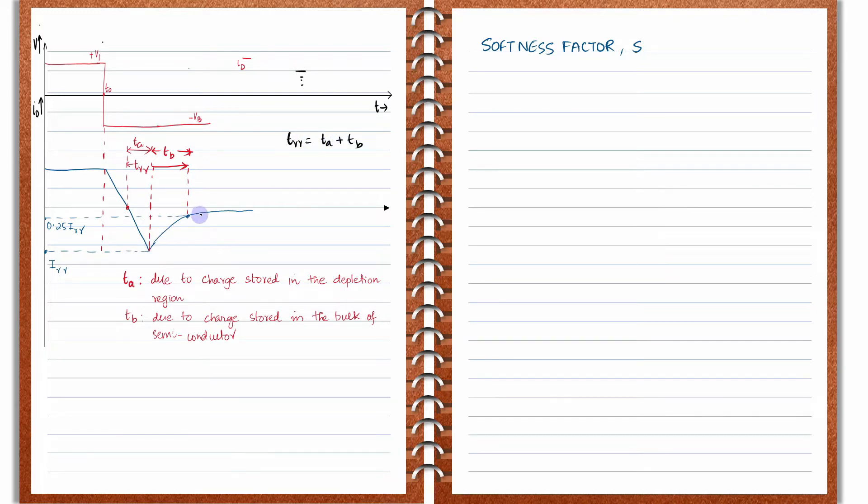Now if you look at this particular recovery here, after this time period TA, the recovery is a very smooth recovery, or it is also called a soft recovery. In some cases, what might happen is that this recovery can be extremely fast. The characteristic might look like this: till here let it be the same, but here the recovery is very fast like this.